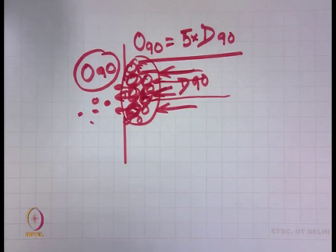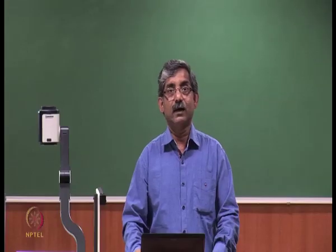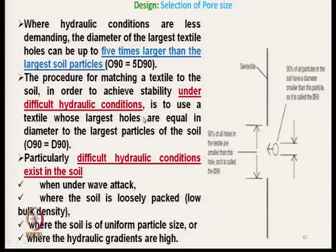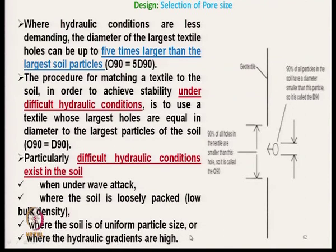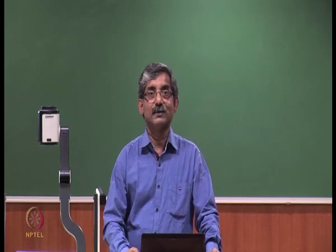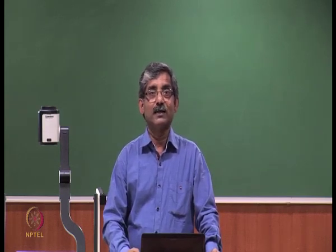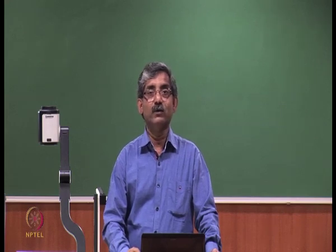Under difficult hydraulic conditions — wave attack, loosely packed soil, low bulk density, uniform particle size, or high hydraulic gradients — the criterion becomes O90 = D90, requiring a tighter pore size match with the soil particle size.